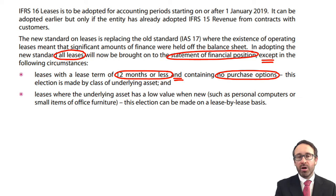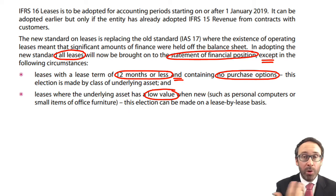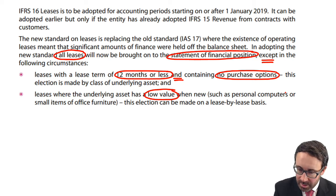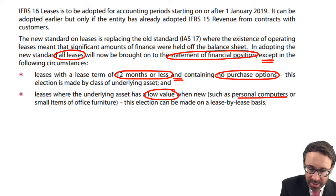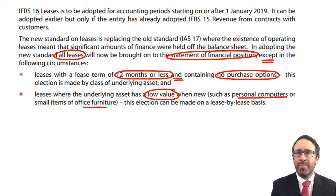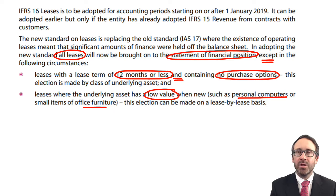The other scenario is low value assets — things such as personal computers, IT equipment, and office furniture. It was felt that the amount recorded as an asset and a liability would be effectively immaterial and would not make a material difference to the financial statements, so we don't need to include them.